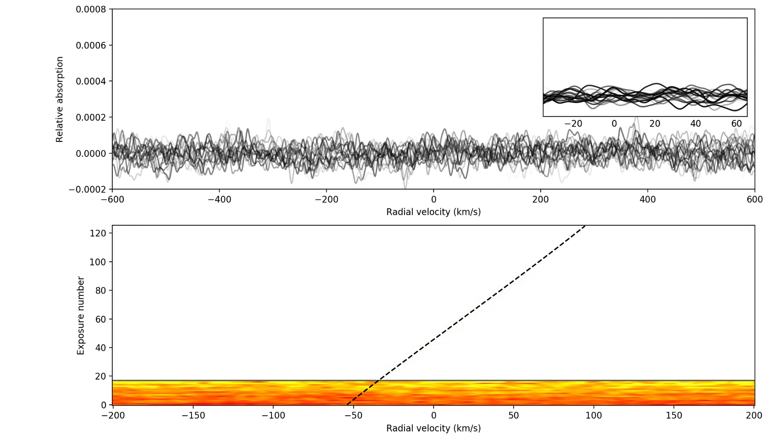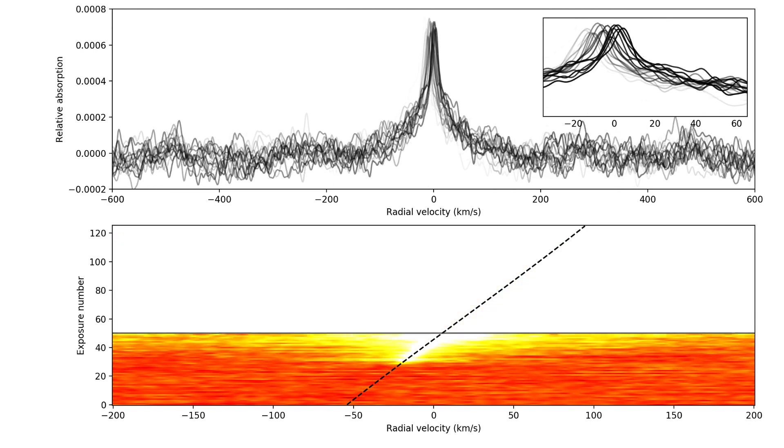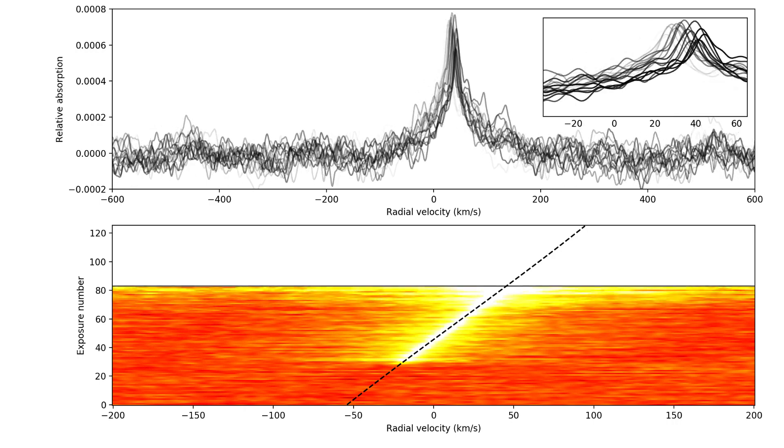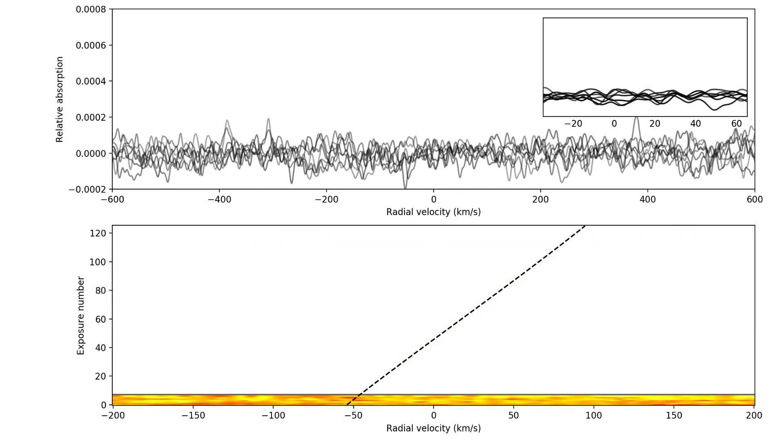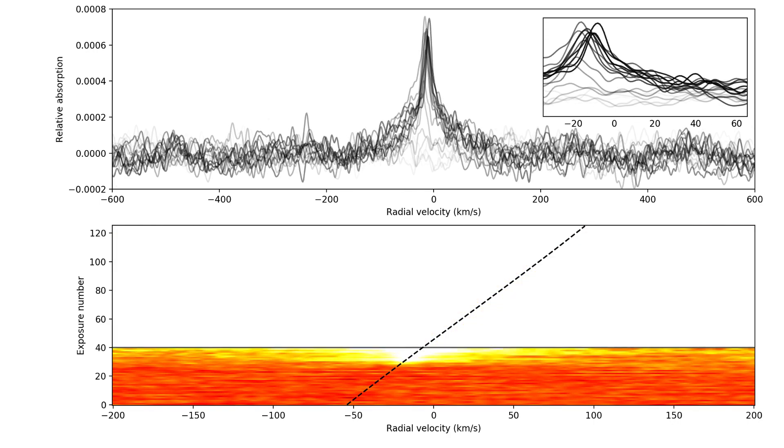The signal you see here is an exaggeration. Most of the time, the strength of the cross-correlation signal is much weaker, meaning that we need to average over the time series to make the absorption visible. To do this, we would need to know the Doppler shift of the cross-correlation function through time a priori.